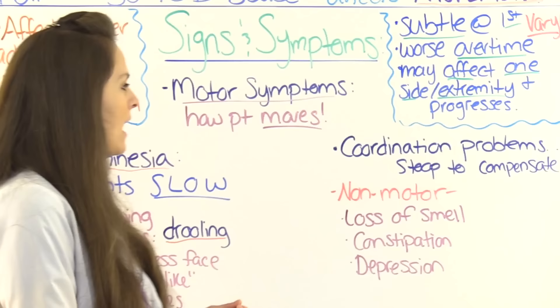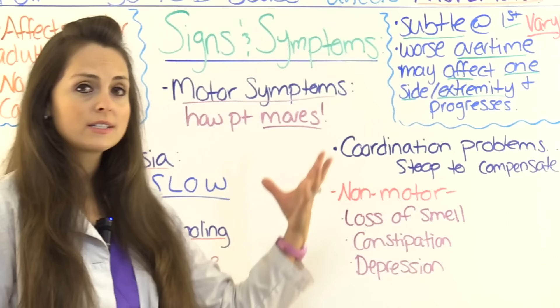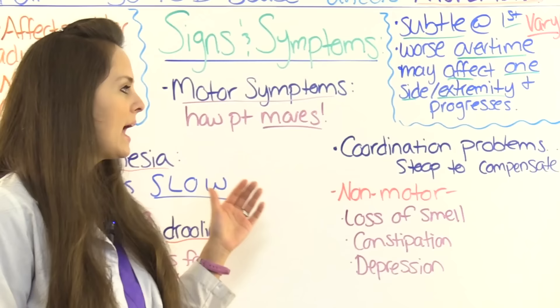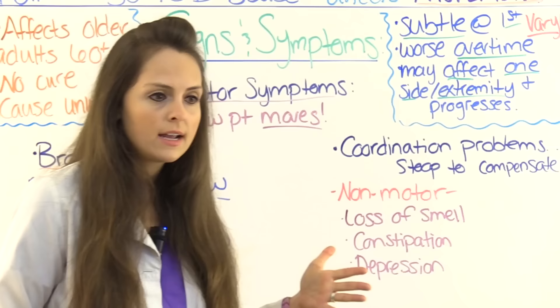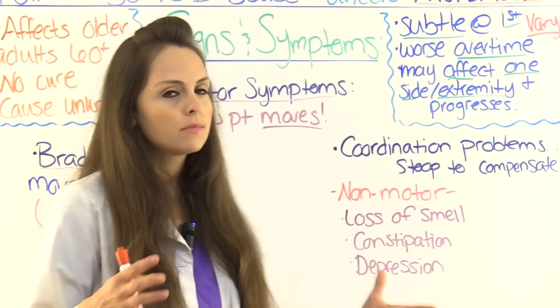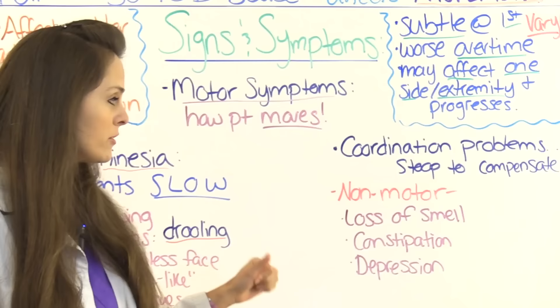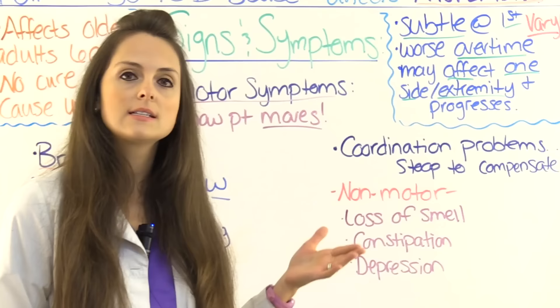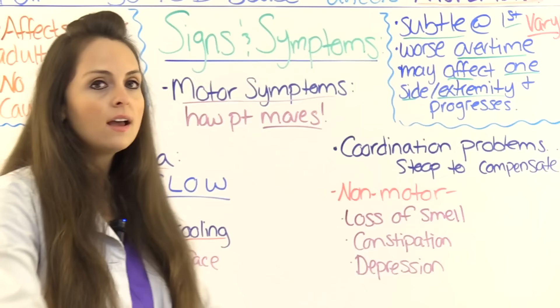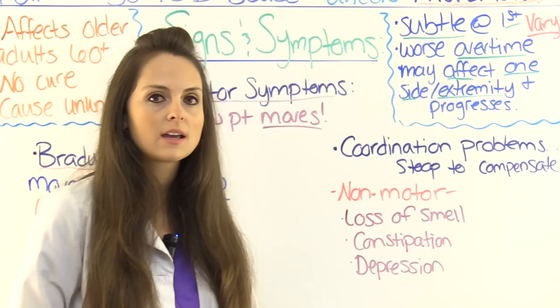Another thing patients can have is problems with coordination, so from a nursing standpoint they are definitely at risk for safety issues like falls and hurting themselves. To compensate because they're afraid of falling, they'll stoop forward to make themselves feel like they have better control of standing. Some non-motor signs and symptoms include loss of smell — Parkinson's patients often say they've lost their sense of smell. They can also have constipation — because movement of the intestines is slowed — and depression.